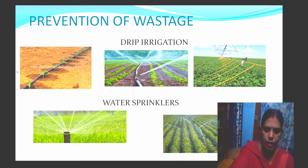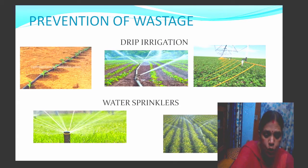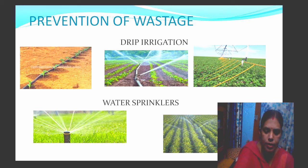The third method is prevention of wastage. Misuse and wastage of water must be prevented. This is possible only when the individual, the community, and the government make a joint effort. It is not possible by a single person — everybody must think together.